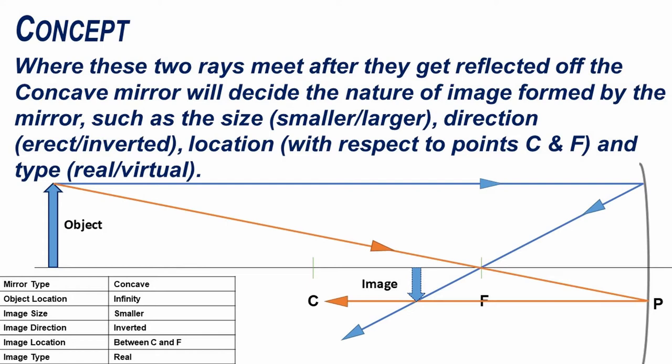The nature of the image includes its size — smaller or larger — its direction — erect or inverted — its location with respect to points C and F, and its type — real or virtual.